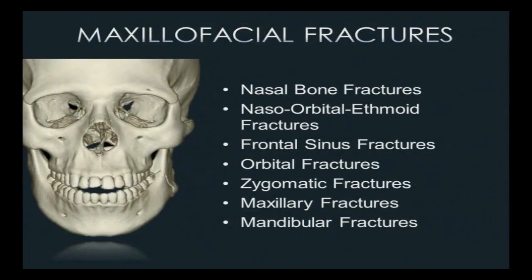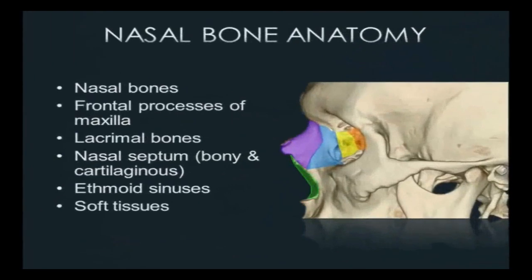We separate facial fractures anatomically: nasal bones, nasal orbital ethmoid fractures, frontal sinus fractures, orbital fractures, zygoma fractures, and maxillary and mandibular fractures. Looking at the nasal bone anatomy, we have the nasal bone proper, the frontal process of the maxilla that forms the wall behind it, and then the more fragile lacrimal and ethmoid bones. We also have the nasal septum with its cartilaginous and osseous components, and the overlying soft tissues.